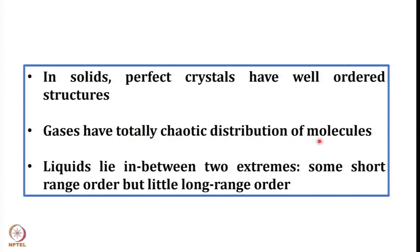Gases have totally chaotic distribution of molecules. The molecules are free to occupy any volume which is available, which is true for liquids also, but for solids there is a well-ordered structure. Gases have total chaotic distribution of molecules, but what about liquids? Liquids lie in between two extremes — in between the structure that a solid crystal possesses and the structure that a gas possesses. Some short range order, but little long range order.